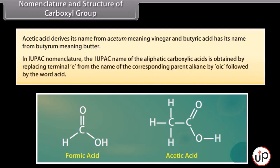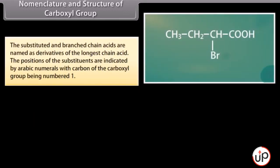In IUPAC nomenclature, the name of aliphatic carboxylic acids is obtained by replacing the terminal 'e' from the name of the corresponding parent alkane with 'oic' followed by the word acid. The substituted and branched chain acids are named as derivatives of the longest chain acid. The positions of the substituents are indicated by Arabic numerals, with the carbon of the carboxyl group being number 1.